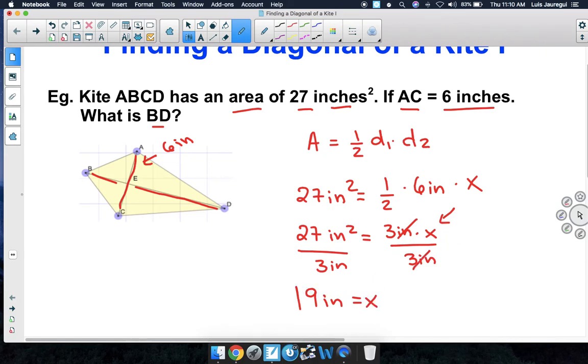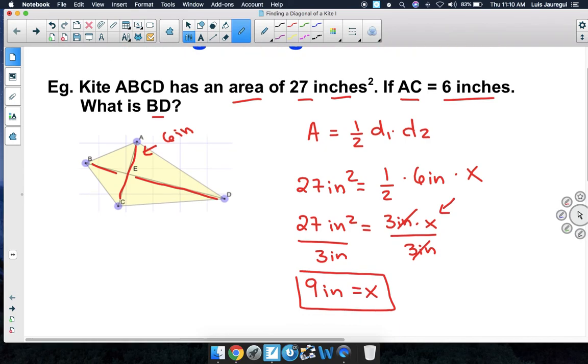So we can say that the other diagonal has a length of 9 inches. However, that diagonal has a specific name. In this case, we call it BD when it came to its length. So we can say the length BD is equal to 9 inches.